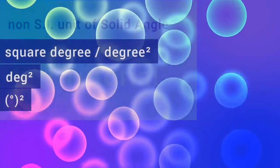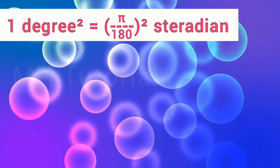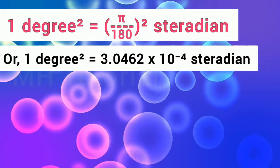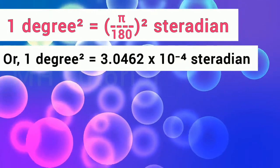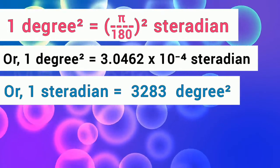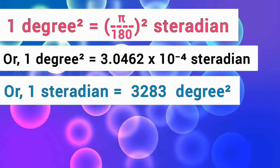1 degree square is equal to pi by 180 whole square steradian, or 3.0462 into 10 to the power minus 4 steradian. Alternately, we can say that 1 steradian is equivalent to 3,283 square degree.